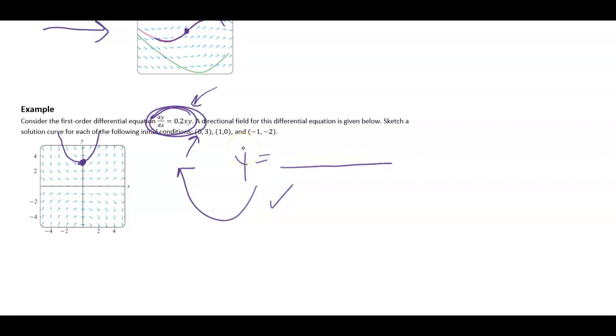then that solution curve must look like this. In fact, any time x equals 0, notice that my slopes are 0. Well, that's because if x equals 0, and I plug that in, then I get my derivative is 0.